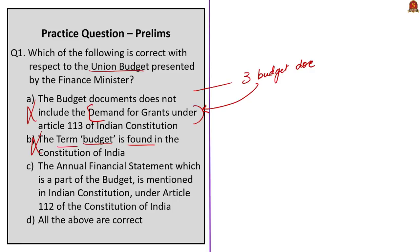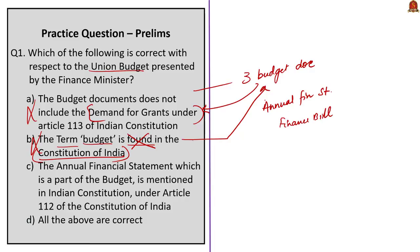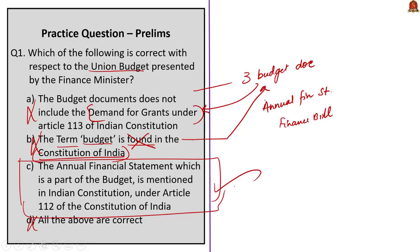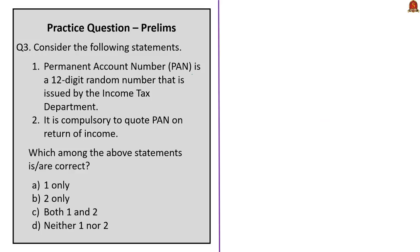There are three budget documents: the Annual Financial Statement, the Demand for Grants, and the Finance Bill. Since option A and option B are incorrect, option D ('all the above are correct') is also incorrect. That makes option C the correct statement. Also note that the Annual Financial Statement, which is part of the budget, is mentioned in the Indian Constitution under Article 112. The next question is based on PAN.